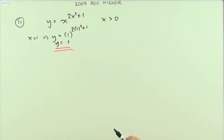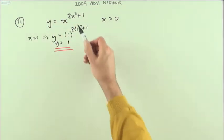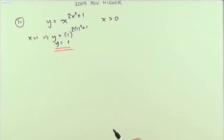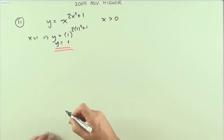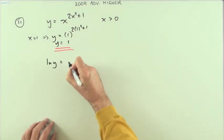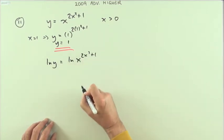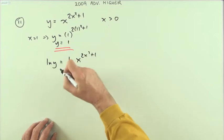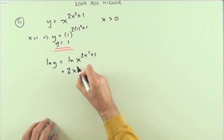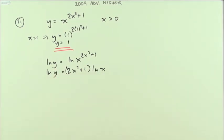Now the next part — what about the derivative? Well, straight away I've got these exponents. The way I'll get at those exponents is by applying logs. I'm going to do some logarithmic differentiation here. So the first thing I'll do is take the logs of both sides: ln y equals ln of x to the power 2x² plus 1. That power can be extracted as a multiple, so 2x² plus 1 times ln x.